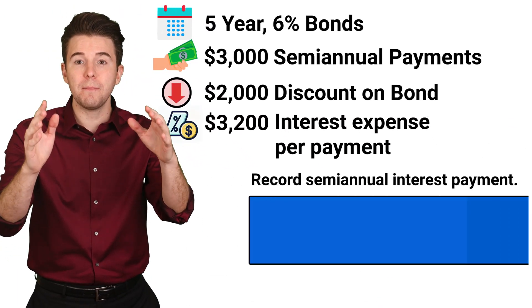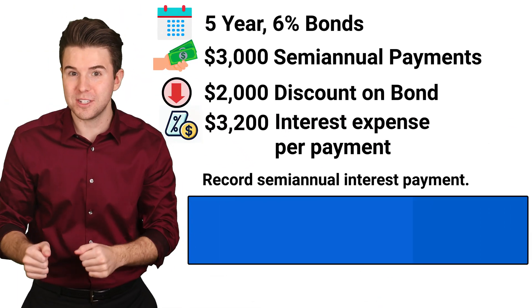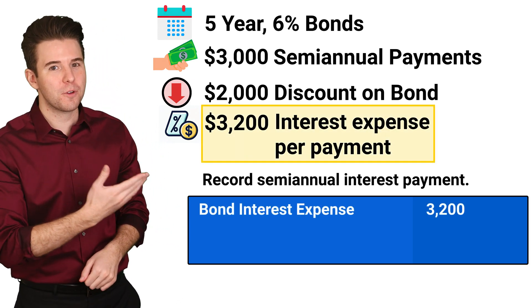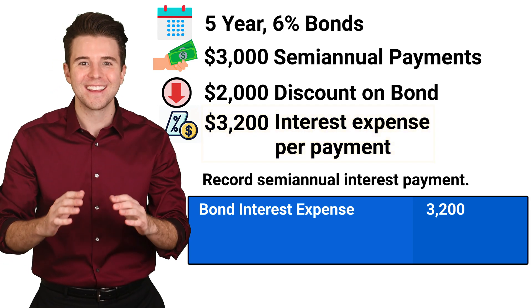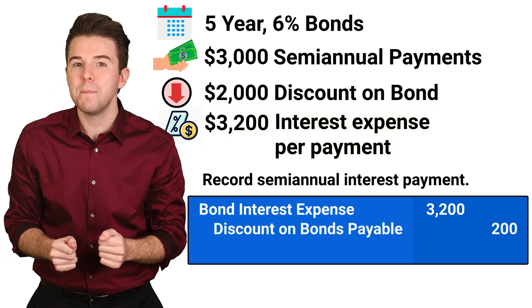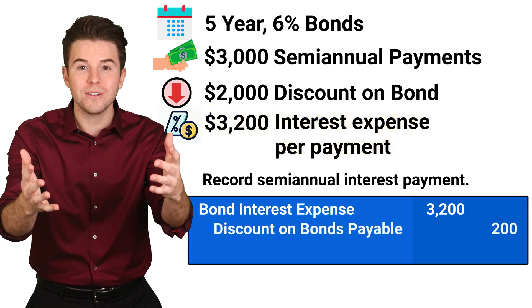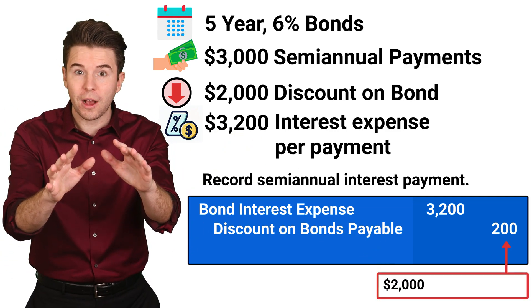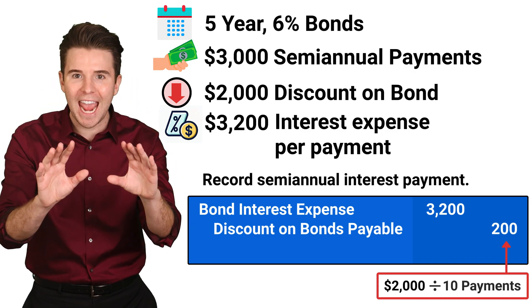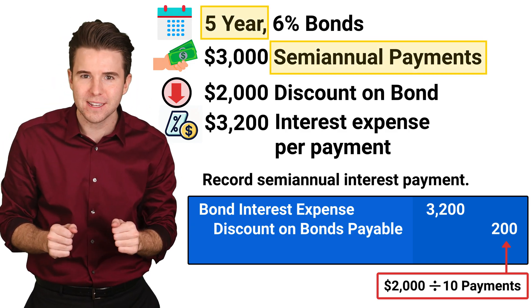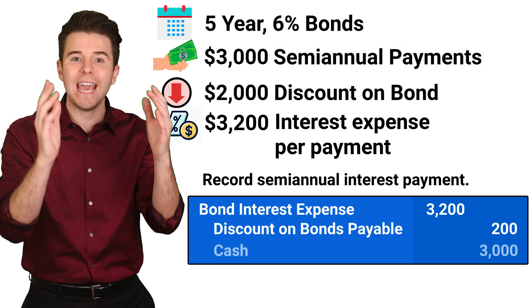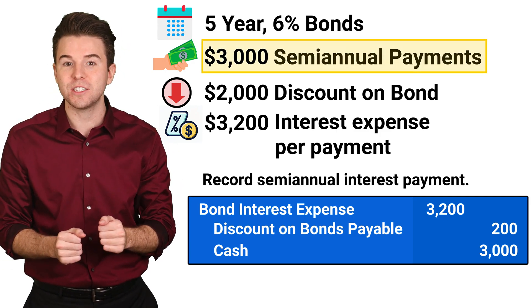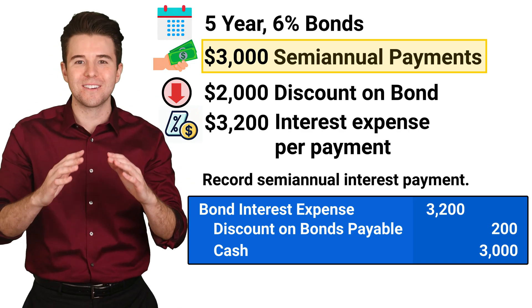Now to record our semi-annual interest payments and amortization, we start by debiting bond interest expense for $3,200. Next, we credit discount on bonds payable for $200. This is computed as the total bond discount of $2,000 divided by 10 semi-annual payment periods. Last, we credit cash for $3,000, as this is the semi-annual cash interest payment we computed earlier.